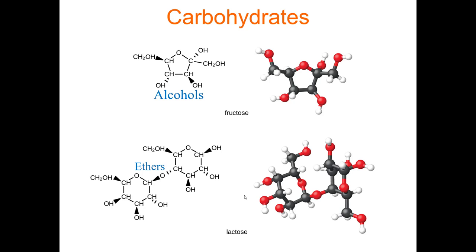There are four types of biological macromolecules — the four main molecules that make up living systems. One is called a carbohydrate. Here is fructose and here's lactose. These carbohydrates have many alcohol groups (OH groups) hanging off the end, and they also have ethers — here's a carbon, an oxygen, and a carbon stuck in the middle without an H. So a carbohydrate is made of ethers and alcohols. Fructose is called a monosaccharide because there's only one ring; lactose is called a disaccharide because there are two rings.